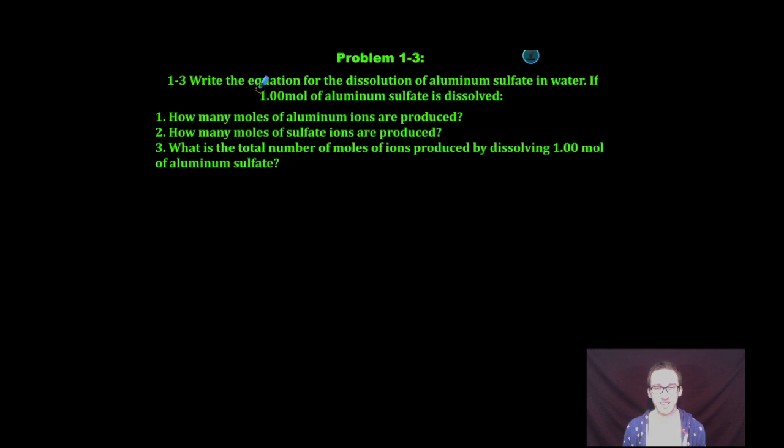This problem asks us to write the equation for the dissolution of aluminum sulfate in water. If 1.00 moles of aluminum sulfate is dissolved: one, how many moles of aluminum ions are produced? Two, how many moles of sulfate ions are produced? And three, what is the total number of moles of ions produced by dissolving 1.00 mole of aluminum sulfate?